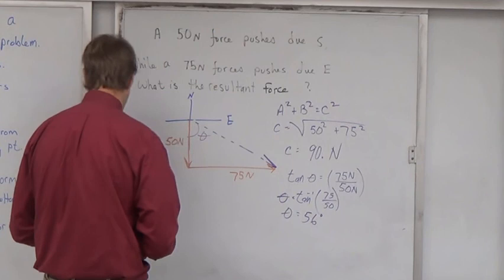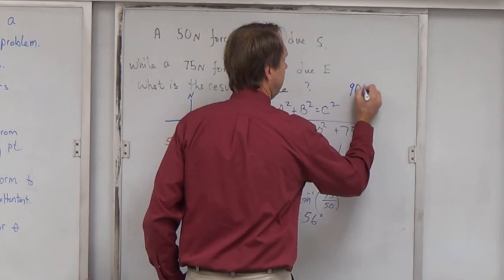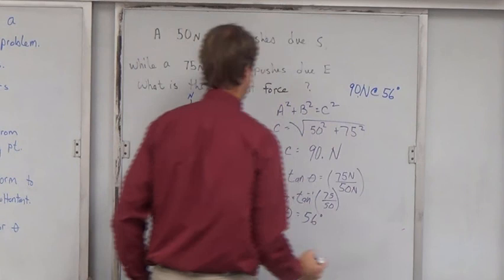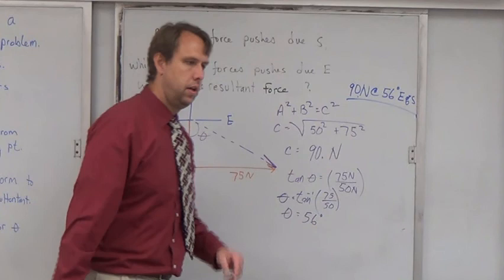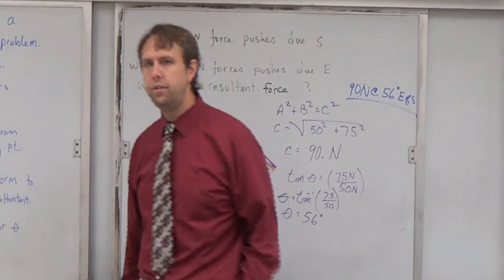So let's go ahead and name that vector. My final answer is 90 newtons at 56 degrees east of south. That is vectors that are at right angles. I'm Mr. Collins, your physics. Go and do great things.